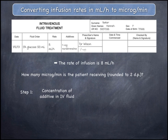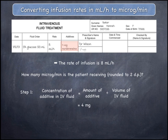Both of these quantities can be read from the order. The concentration is equal to the amount of noradrenaline divided by the volume of the IV fluid, which is 4mg divided by 50mL, giving 0.08mg per mL.